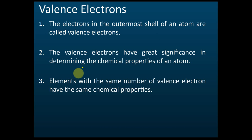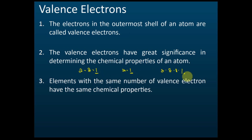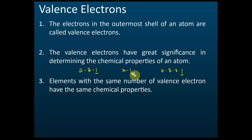For example, if we have one atom with electron arrangement 2,8,1, another with 2,1, and another with 2,8,8,1 — all of them have one valence electron, which is the electron in the outermost shell. So these three elements have the same chemical properties because they have the same number of valence electrons.